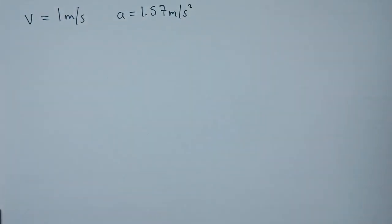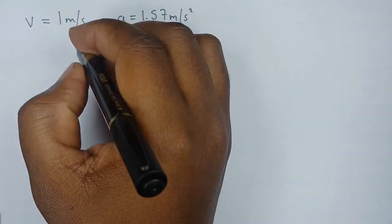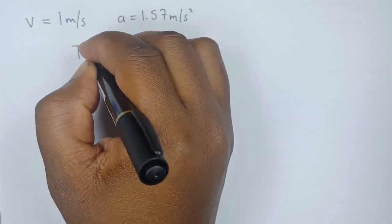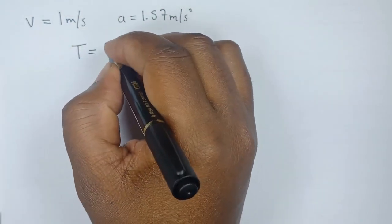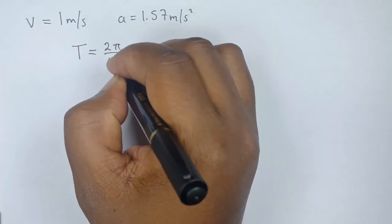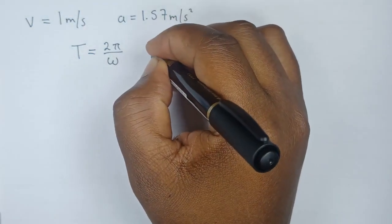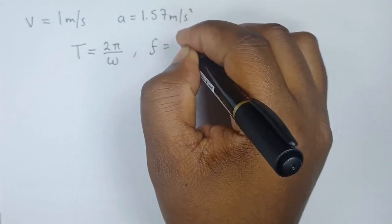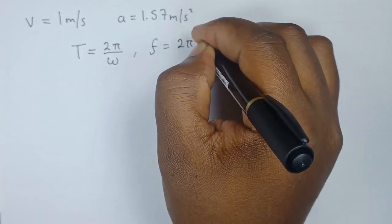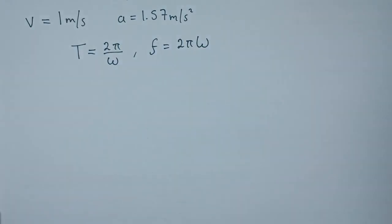So now that we have these two, we can go ahead and calculate the period. Please note that time period is found by T = 2π over ω, where ω is the angular frequency. In case you've been asked to find the frequency, we can say frequency is equal to 2πω.